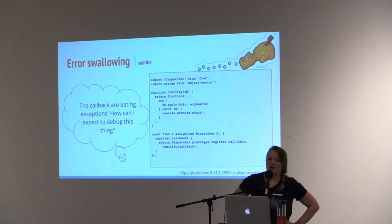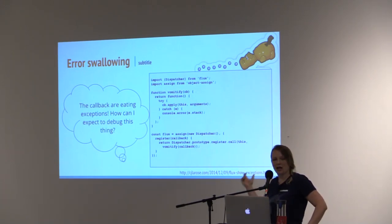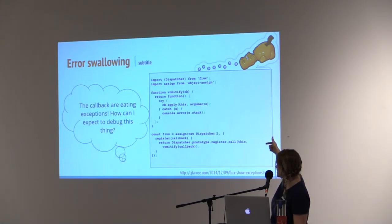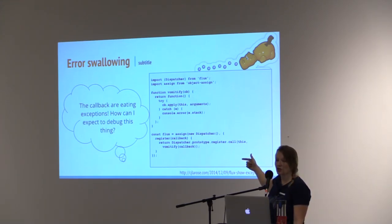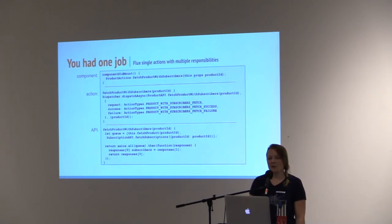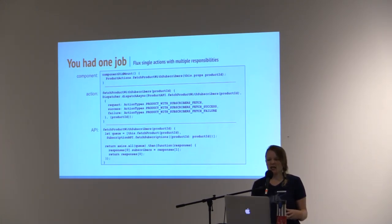So we monkey-patched the dispatcher with this 'vomidify' method to get errors to appear in our console again. In order to do that, you first need to define a function that logs errors of the function that it's passed. And then you need to override the register method in the app dispatcher to use your vomidify method. The best pattern we came up with had us closely coupling our actions to the full set of data that a given view needed to display. It wasn't ideal, but the dispatcher didn't complain anymore.